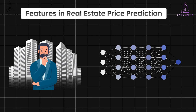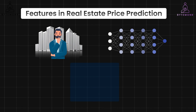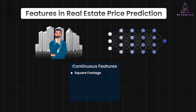Here is how features play a role. There are different types of features. Continuous features represent numerical values that can take on any value within a range. For example, in real estate, this includes square footage, which is the total living area of the house; the lot size, which is the total area of the land the house sits on; or maybe a distance to park, such as how far the house is from the nearest park.